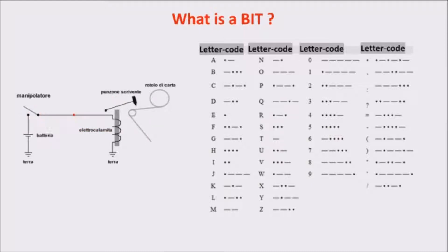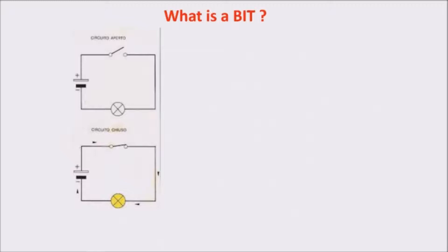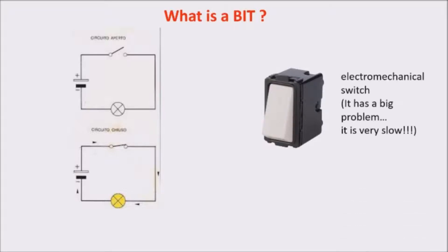Note how you put dash and dots side by side, thus having more digits for a character. Another example of bits is a circuit with a switch that can be open or closed, so with two states. We use a common electromechanical switch that has, unfortunately, a big problem. It is very, very slow.